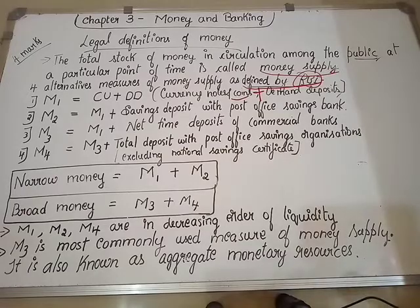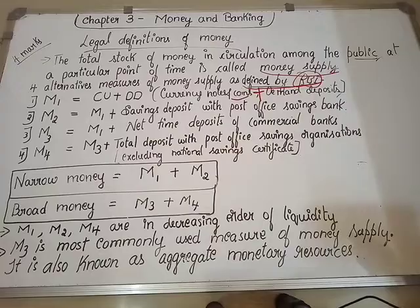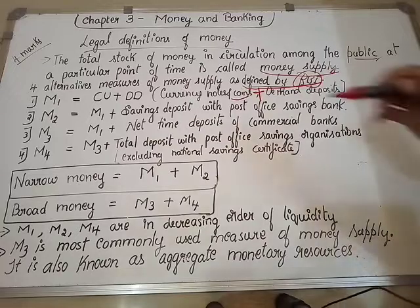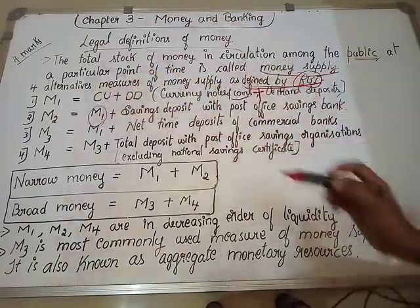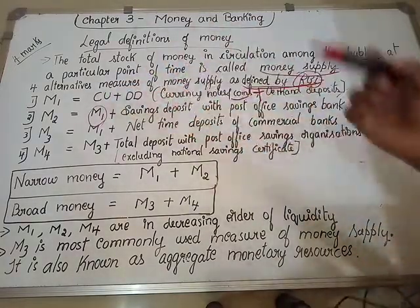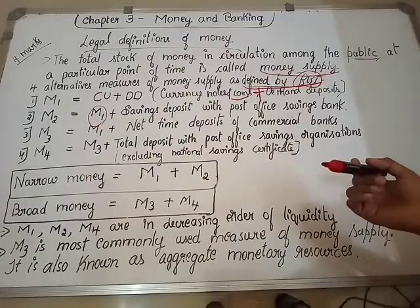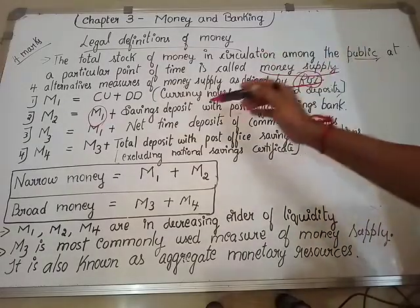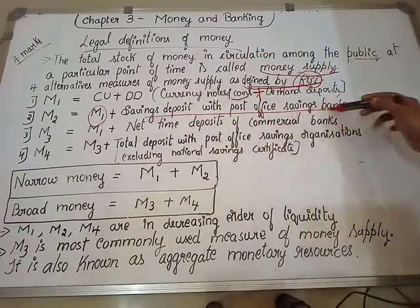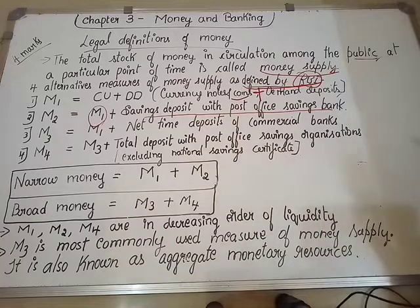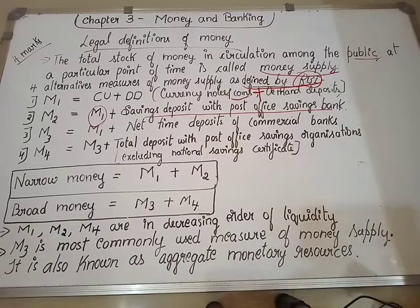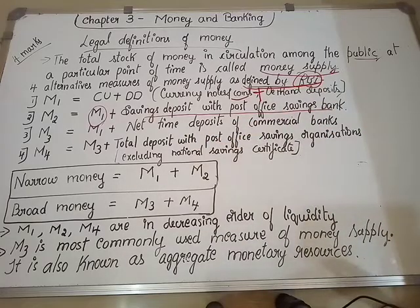The second definition is M2. M2 includes M1 — that is currency notes and coins plus demand deposits — along with saving deposits with post office saving banks. So, money deposited by the public in post office saving banks is also included under M2.